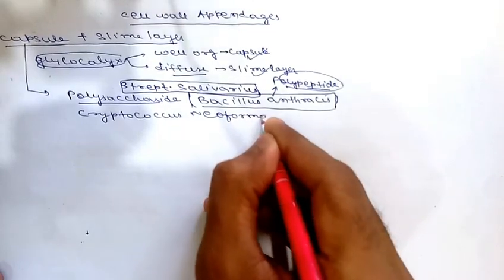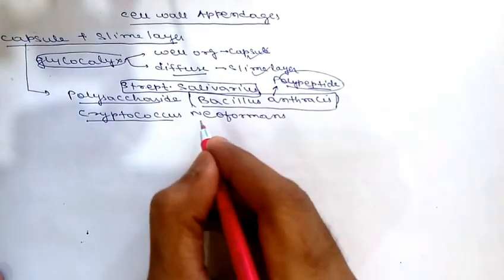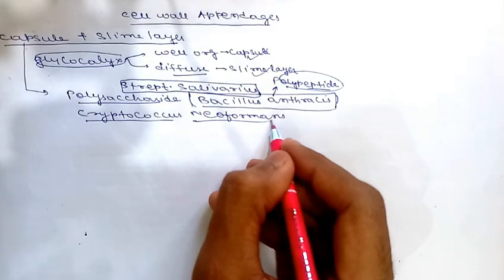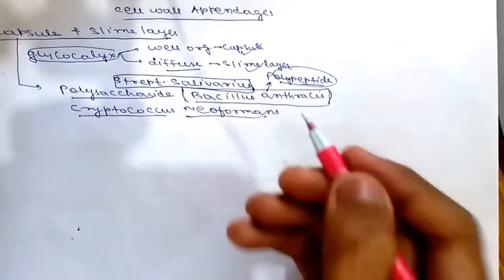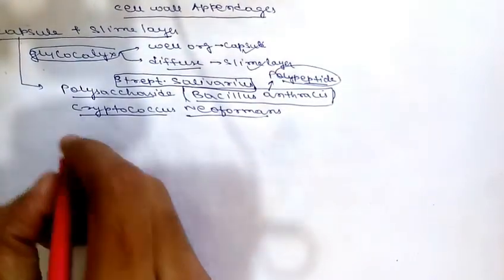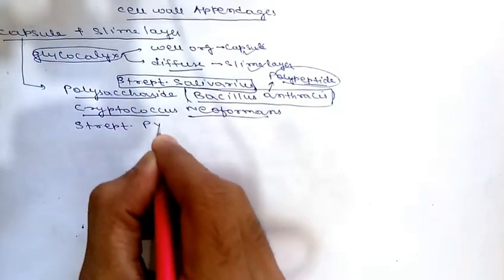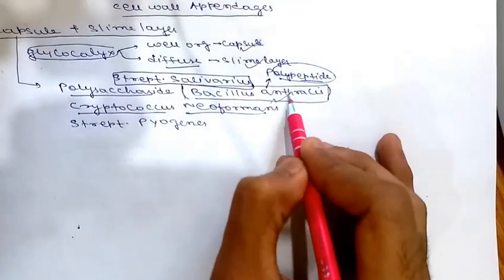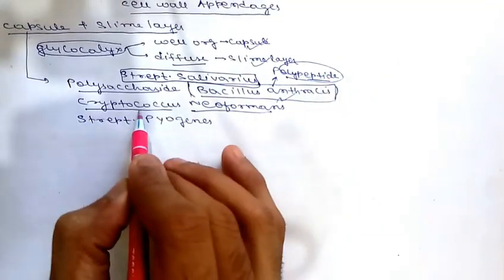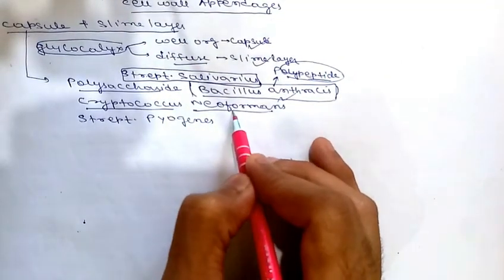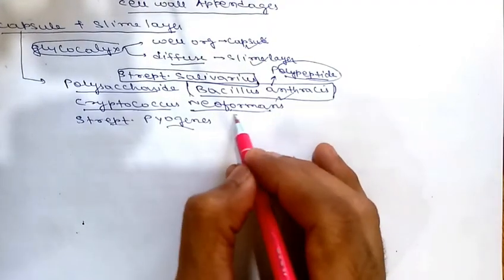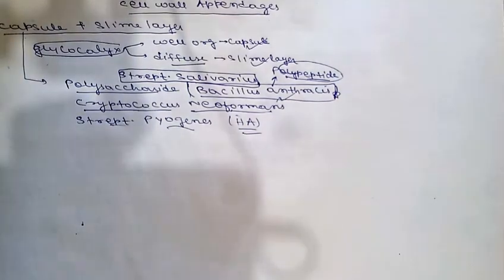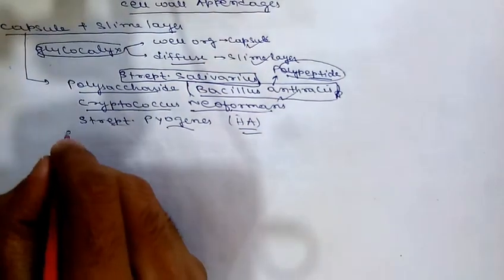Cryptococcus neoformans is a fungus that has a capsule. One more exception is Streptococcus pyogenes, where the capsule is made of hyaluronic acid. So: Bacillus anthracis has a polypeptide capsule, Cryptococcus neoformans is a capsulated fungus, and Streptococcus pyogenes has hyaluronic acid in its capsule.